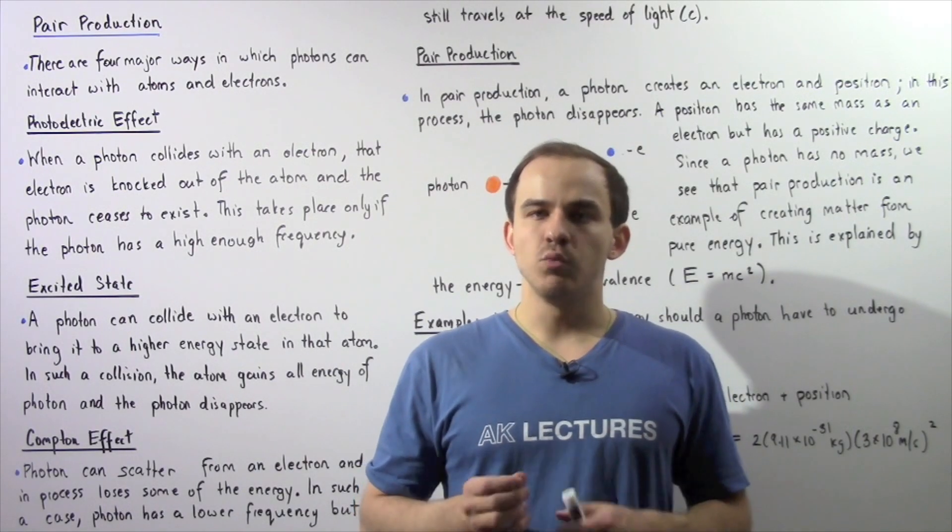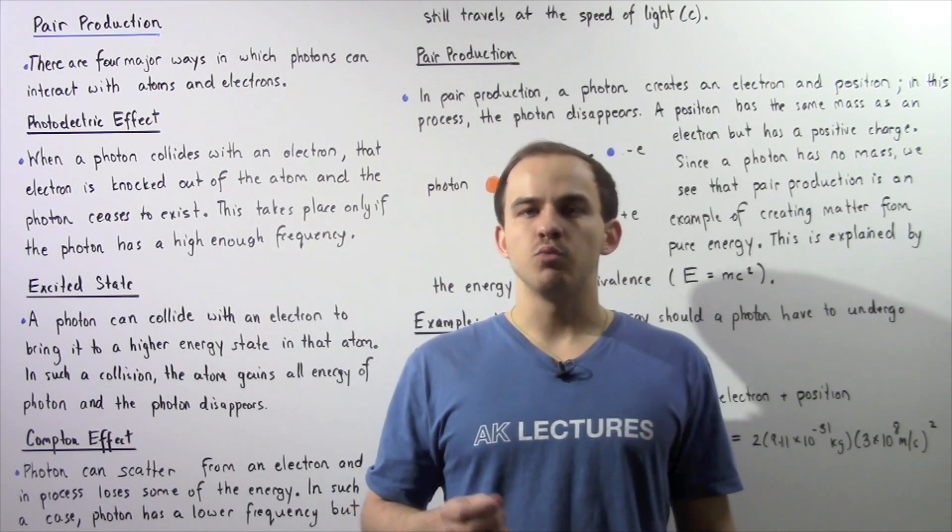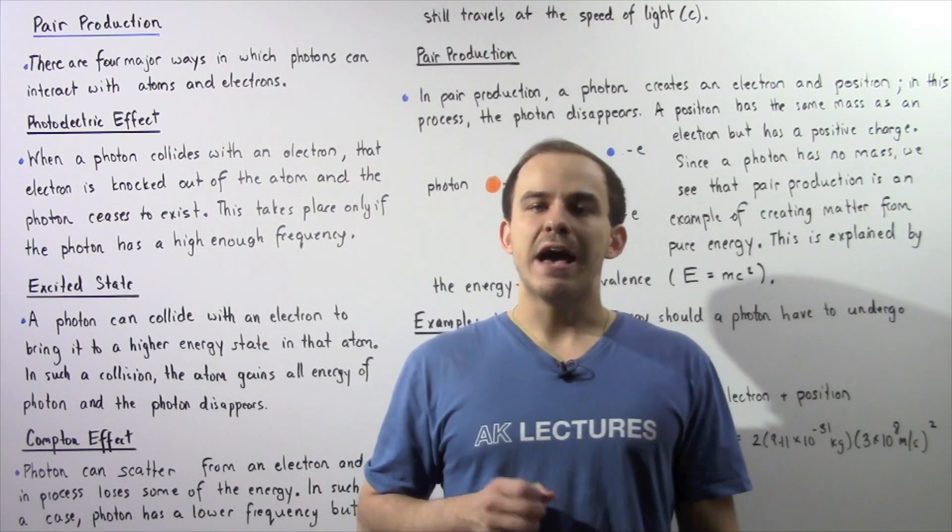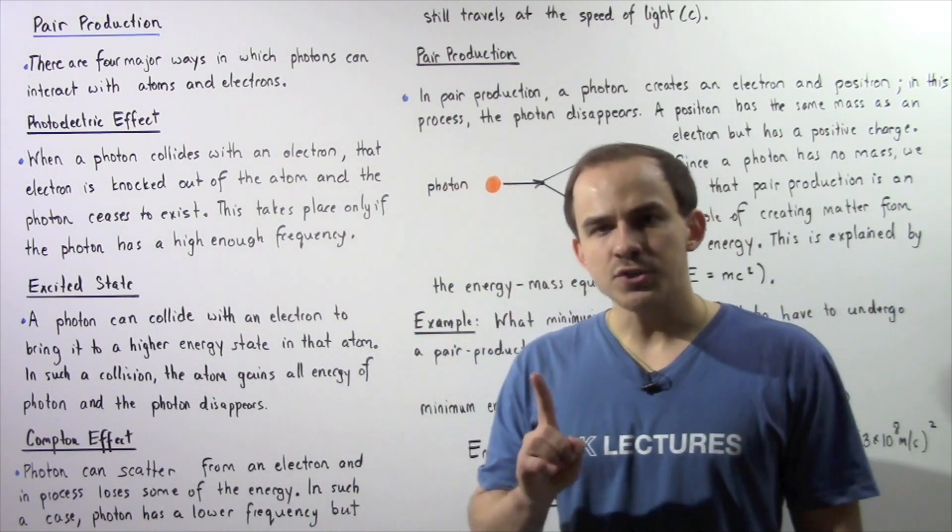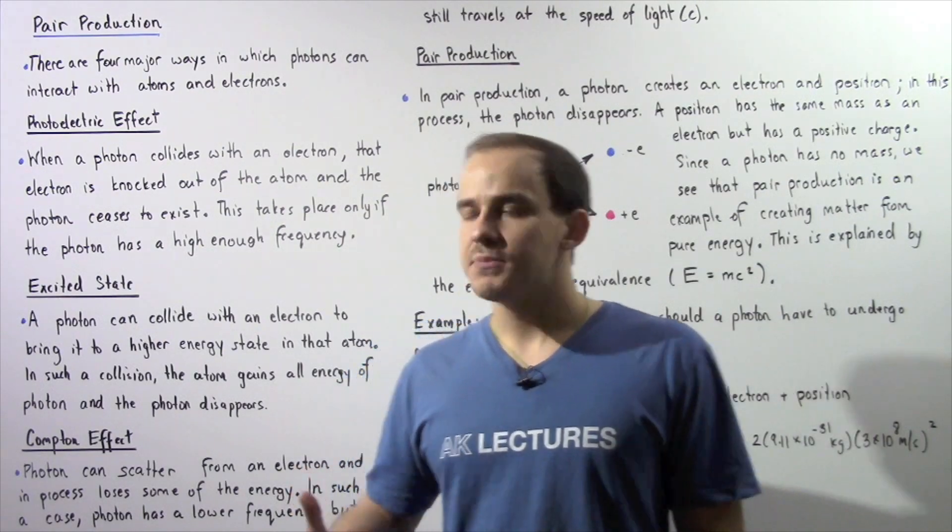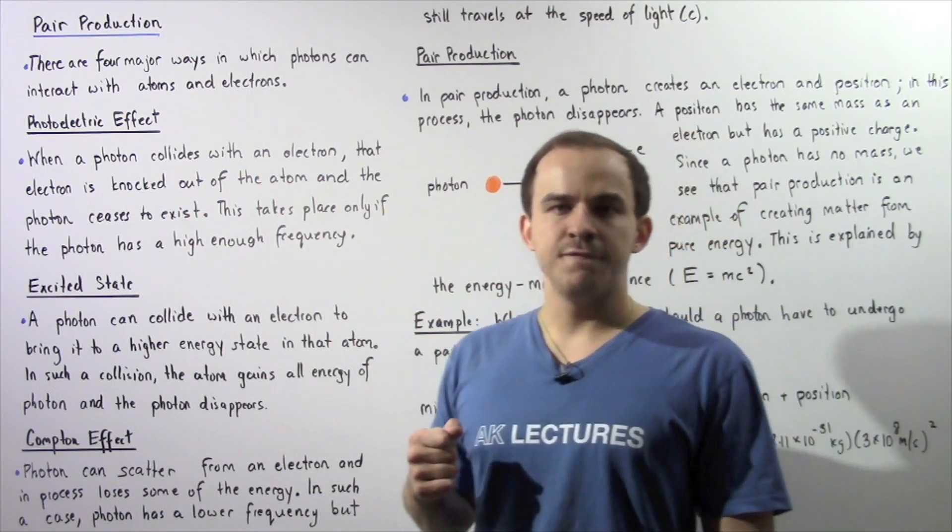There are four major ways in which photons can interact with electrons and atoms found inside matter. So let's begin by discussing the first way, which is described by the photoelectric effect.